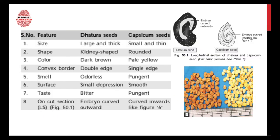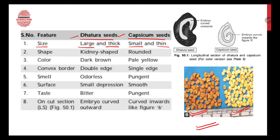Now let's look at the differences between dhatura seed and capsicum seed. Both seeds look very much alike, so one can easily get confused. The first difference is size: dhatura seeds are comparatively larger and thicker, whereas capsicum seeds are small and thin. You can evidently see in the picture that the dhatura seed is larger than the capsicum seed.